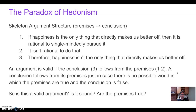We don't have to accept Conclusion 3 if Premises 1 and 2 are not true. So the question is: do we have to accept the first two premises? Premise 2 — that it's not rational to single-mindedly pursue happiness — seems hard to deny; it's a pretty plausible premise. And Premise 1 also looks pretty plausible. So what do we want to say?